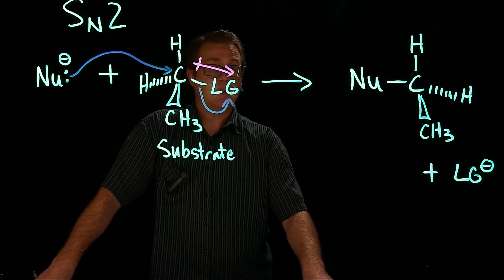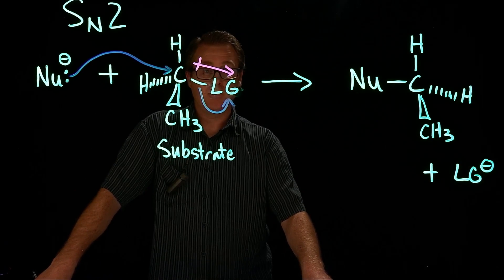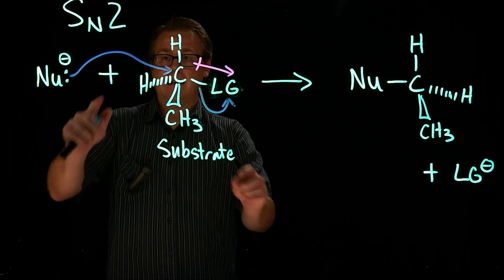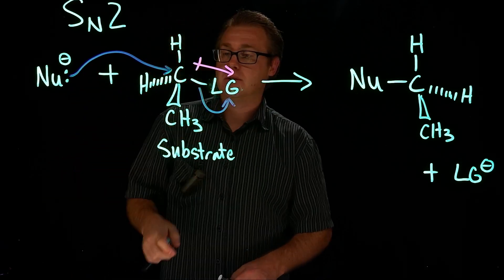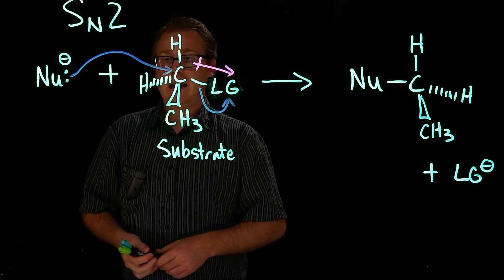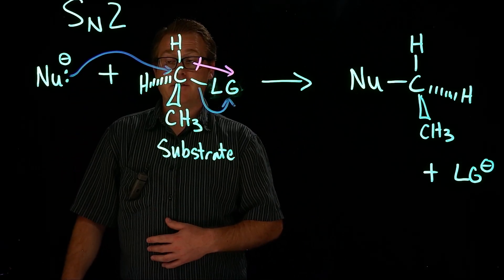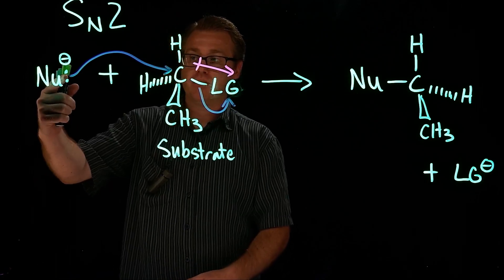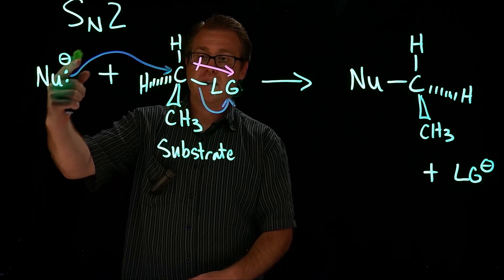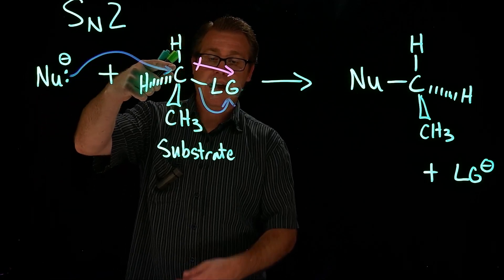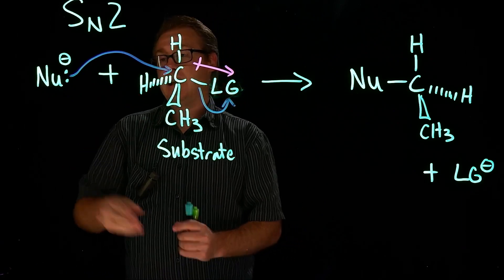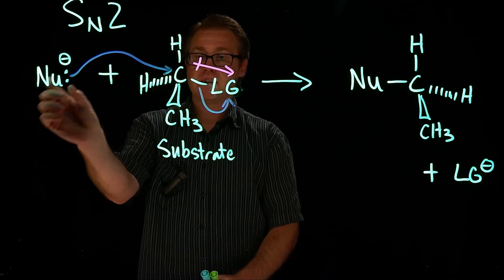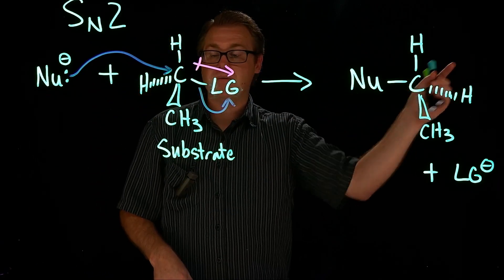So that is the SN2 mechanism. It has two arrows and it's happening in a concerted fashion. When this nucleophile comes in and attacks, the leaving group leaves. It's more like the nucleophile is coming in and kicking the leaving group off.